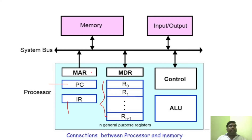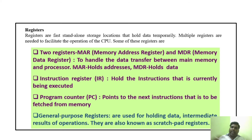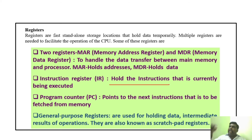MAR is the memory address register, which holds the address of the memory location. MDR is the memory data register, which holds the data needed for that particular operation. For data transfer between main memory and the processor, MAR and MDR are used — MAR holds the address and MDR holds the data. IR holds the current instruction being executed, and PC points to the next instruction.